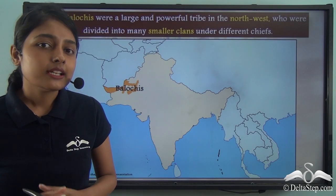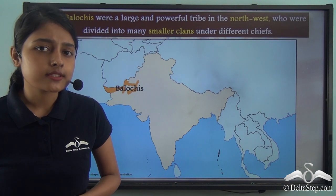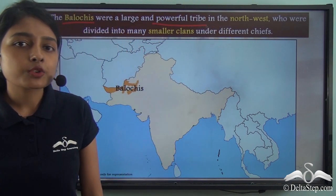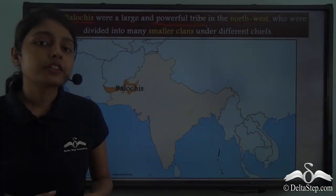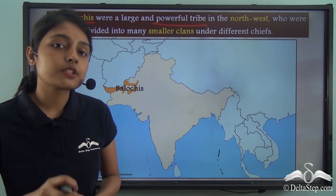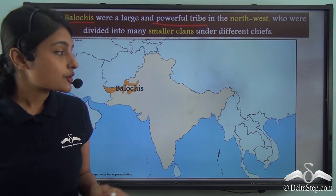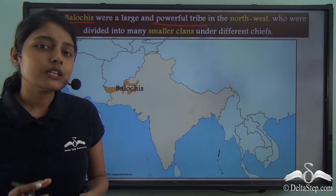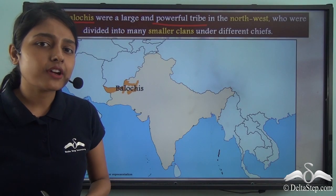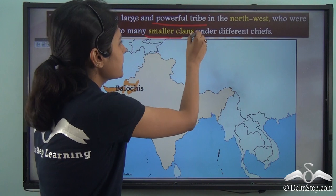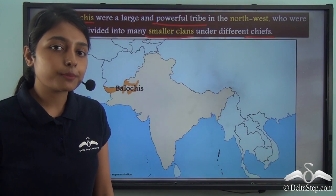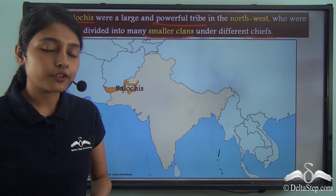In the same north-western region lived another group known as the Balochis. The Balochis were a large and powerful tribe found in the north-western part of the Indian subcontinent, in a region known as Balochistan, located around the Iranian plateau. This tribe was divided into several smaller clans, each ruled by their own chiefs.